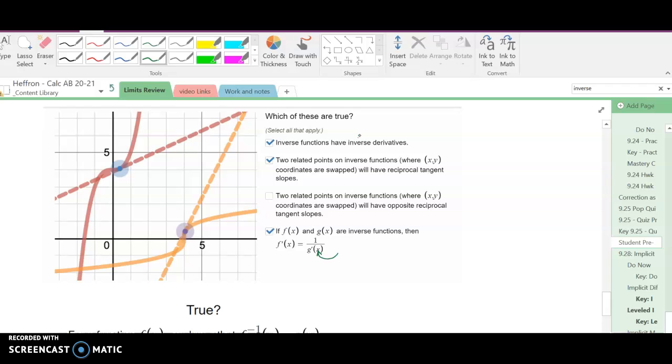Which of these are true? Inverse functions have inverse or reciprocal derivatives. Two related points on the inverse function have reciprocal tangent slopes, where the x and y coordinates are swapped.